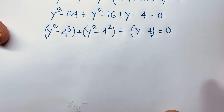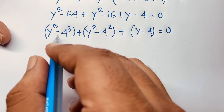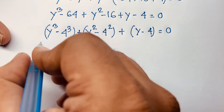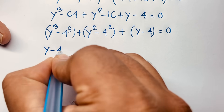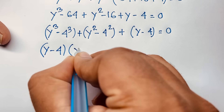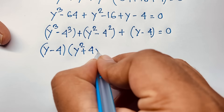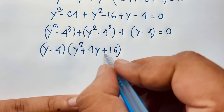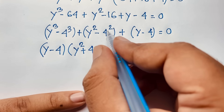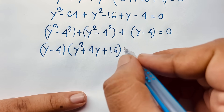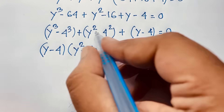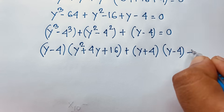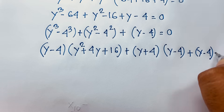For the first group, I apply the difference of cubes formula: a cubed minus b cubed equals a minus b times a squared plus ab plus b squared. So y cubed minus 4 cubed equals y minus 4, times y squared plus 4y plus 16. For the second group, I apply the difference of squares formula: a squared minus b squared equals a plus b times a minus b. So y squared minus 16 equals y plus 4 times y minus 4. The full expression becomes: y minus 4, times y squared plus 4y plus 16, plus y plus 4 times y minus 4, plus y minus 4, equals 0.